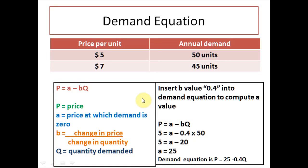Now that we have calculated B, we can simply insert the B value 0.4 into the demand equation to compute a value. What is the a value? a value is the price at which demand is zero. So let's insert B into the equation.